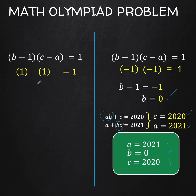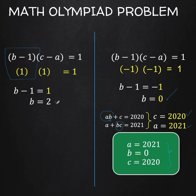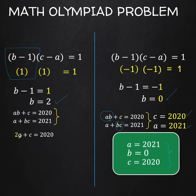In Case 2: B minus 1 equals positive 1. Adding 1 to both sides gives B equals 2. Substituting B equals 2 into our original equations, we get 2A plus C equals 2020 and A plus 2C equals 2021. We solve this system by elimination, multiplying the second equation by negative 2 to get negative 2A minus 4C equals negative 4042.